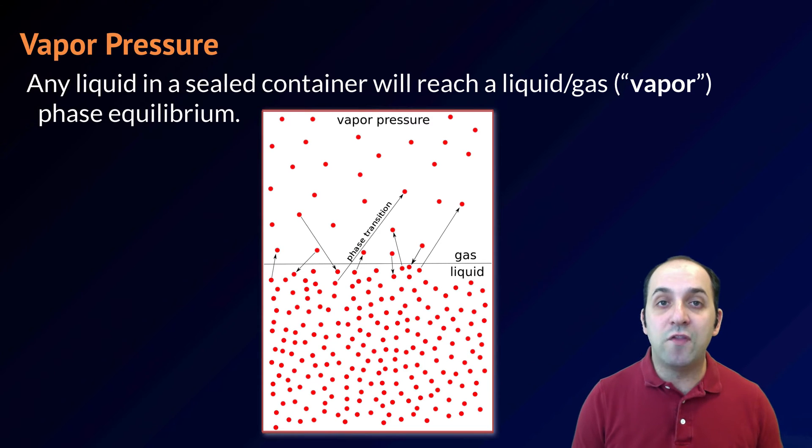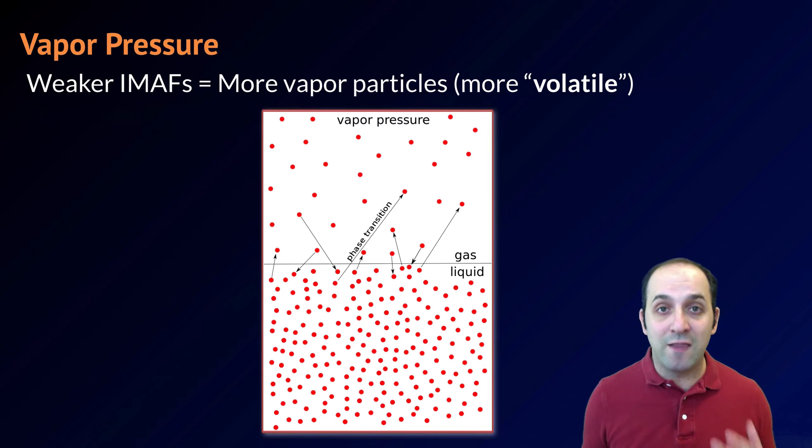The particles of the substance that have become a gas are what we call the vapor. And the pressure that that vapor exerts in that closed container is what's called the vapor pressure. Vapor pressure is going to be related to how easily the particles of that liquid can become a gas and how many of them will exist as a vapor at particular conditions.